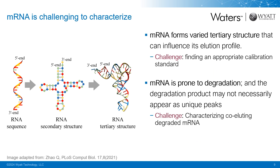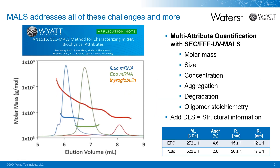mRNA is particularly tricky to characterize. These molecules tend to form tertiary structures that make it difficult to characterize using calibration standards that match them. To make matters more challenging, mRNA are prone to degradation and the degraded products may not necessarily always elute as distinct peaks. By adding MALS to your SEC method, this will allow you to look under the hood at your eluted peaks and determine if the mRNA's molecular weight is different than what you expect in any way. By adding multi-angle light scattering detectors, this will tackle many of these challenges head-on, and as a result, we can get more information in a single run, including information on aggregation, degradation products, and their molar masses.